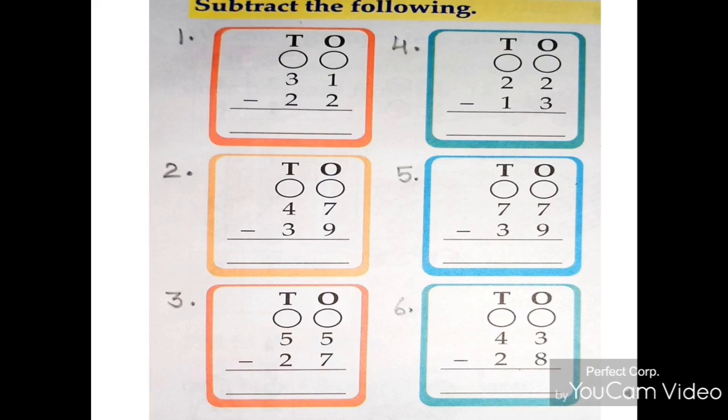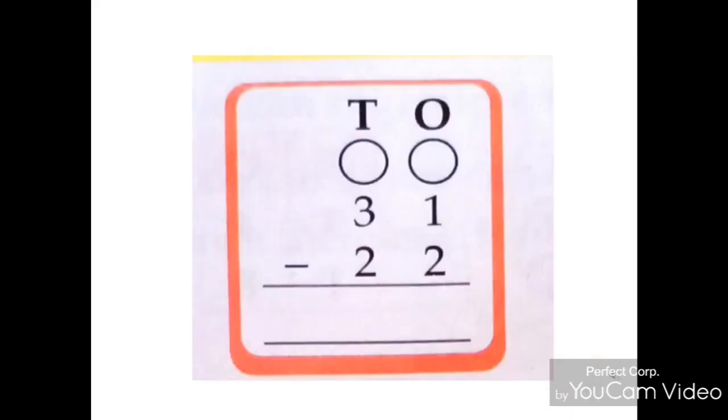Now see the first sum. Here the numbers are 31 minus 22. Let's find out the difference. Here 1 is less than 2, so we cannot subtract 2 from 1.